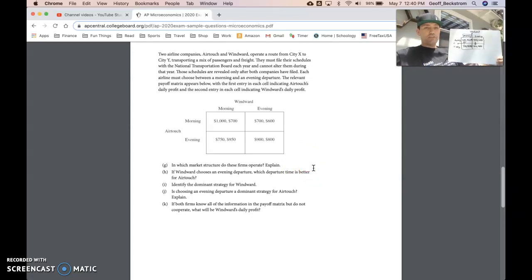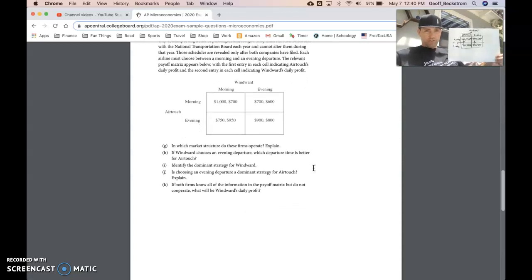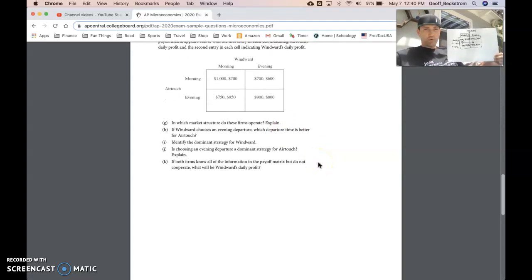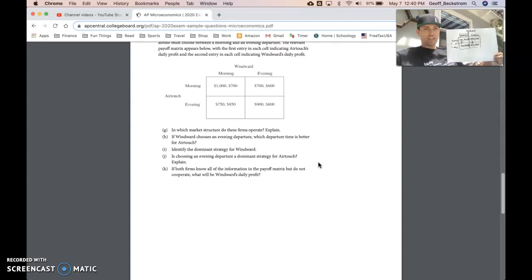So anytime you see a payoff matrix, the first thing I always do is dominant strategy analysis so I can kind of get my mind straight on the question. But for part G, it's asking us which market structure. It's always oligopoly. Just memorize that. And remember, it's oligopoly because there are so few firms that the firms' decisions make them interdependent. So Windward and Air Touch have impact on each other's profitability based upon their pricing or departure decisions in this case. So that's our definition of interdependent. So your explanation for part G should mention that word interdependent to make sure you get full credit for a question like that.